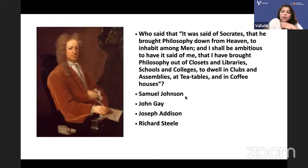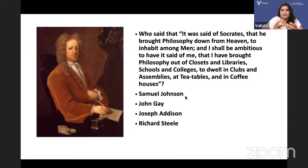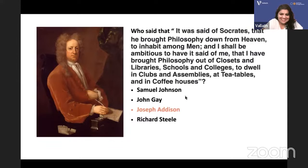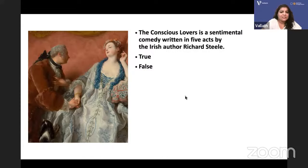Who said: 'It was said of Socrates that he brought philosophy down from heaven to inhabit among men, and I shall be ambitious to have it said of me that I have brought philosophy out of closets and libraries, schools and colleges, to dwell in clubs and assemblies, at tea tables and in coffee houses'? He wrote essays in the Tatler and the Spectator to bring philosophy to everyday life. It is Joseph Addison.